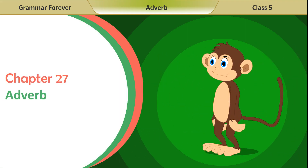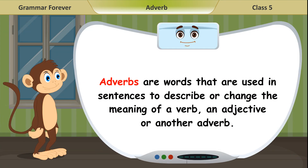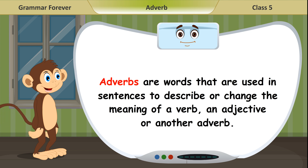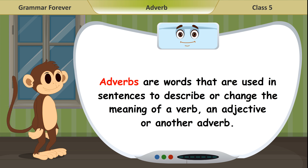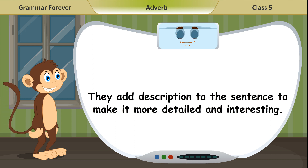Chapter 27: Adverb. Adverbs are words that are used in sentences to describe or change the meaning of a verb, an adjective, or another adverb. They add description to the sentence to make it more detailed and interesting.